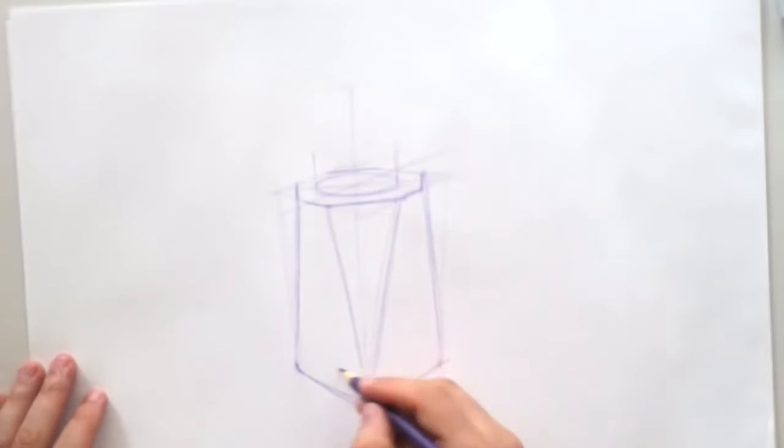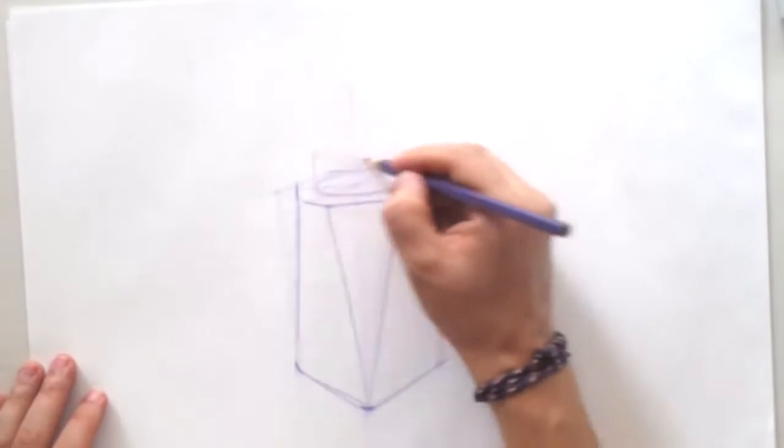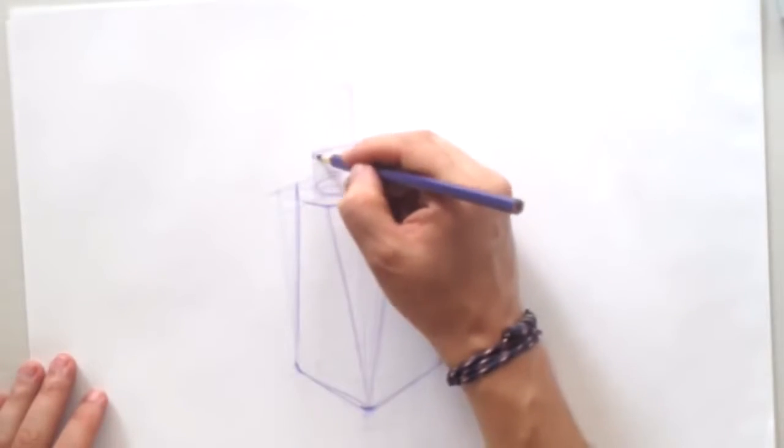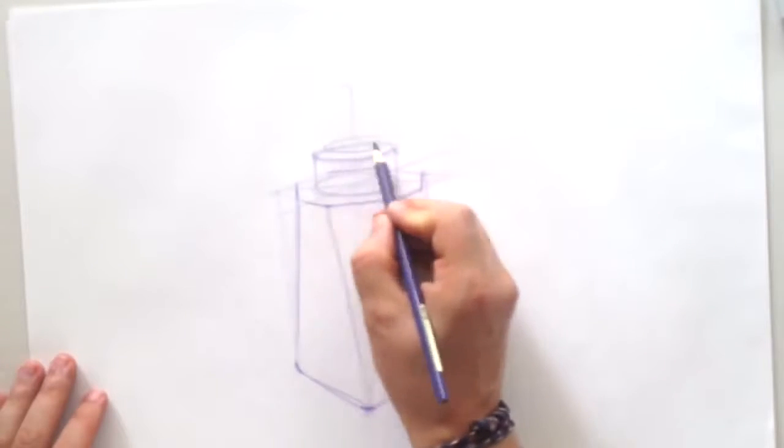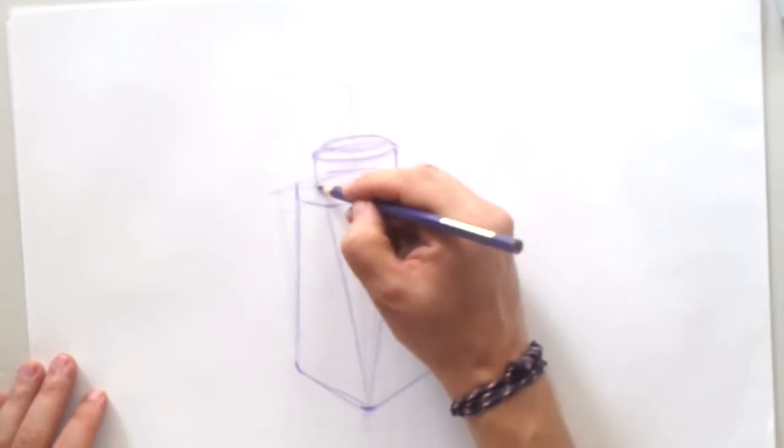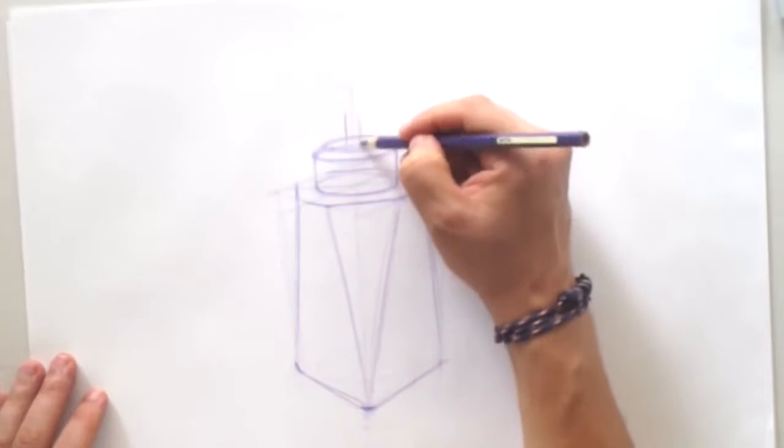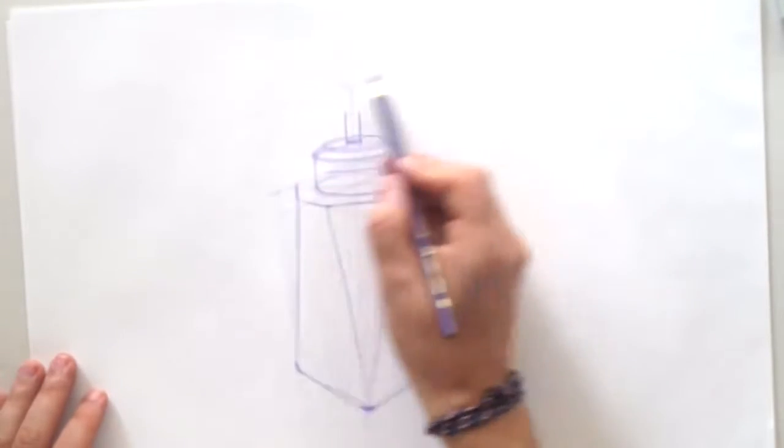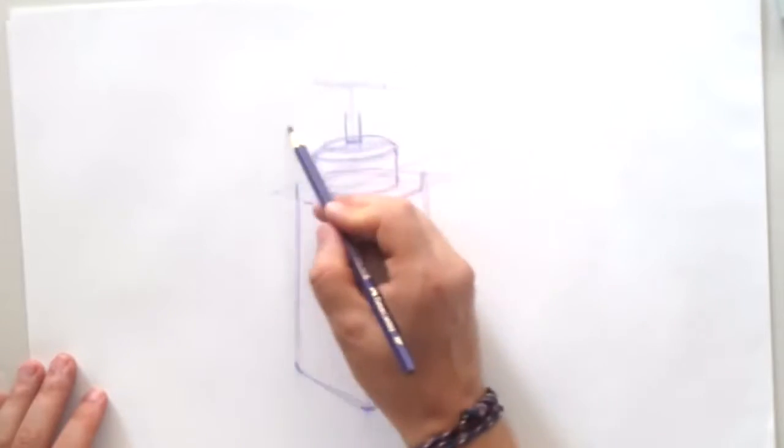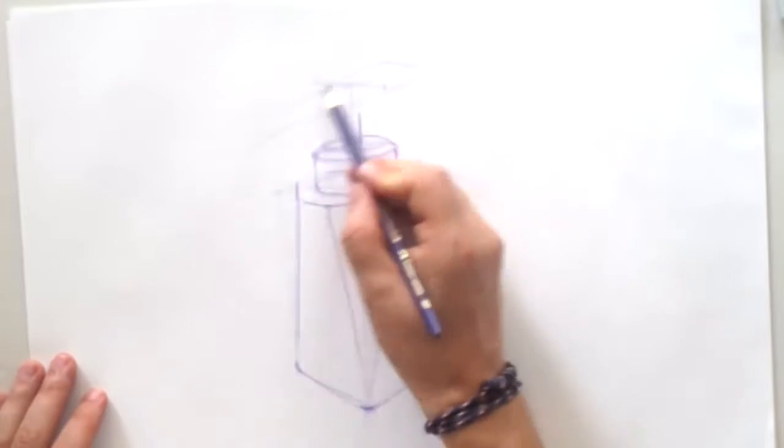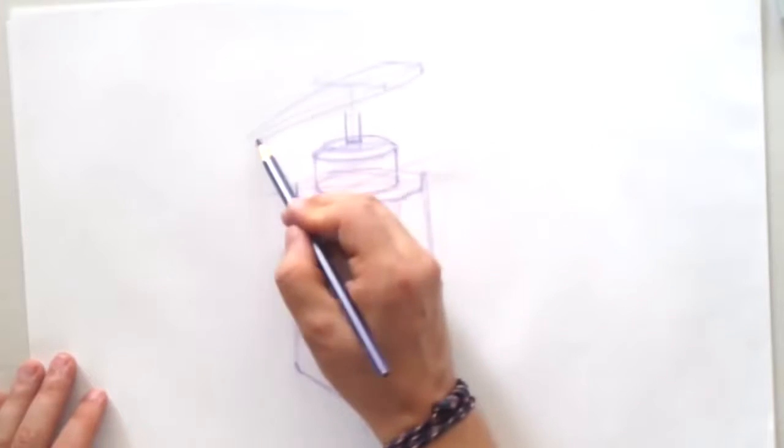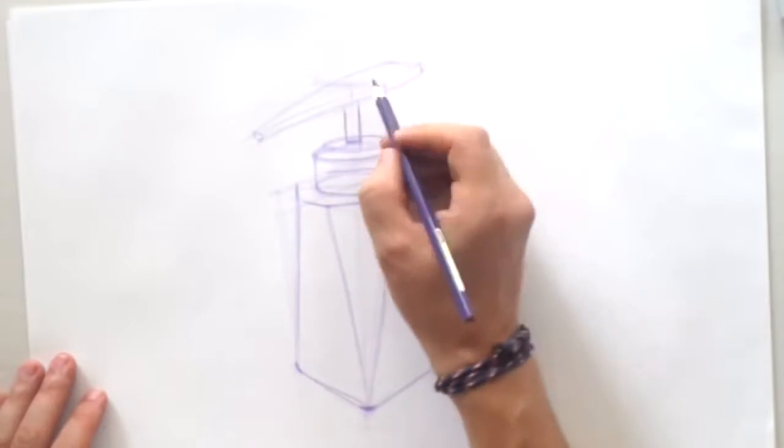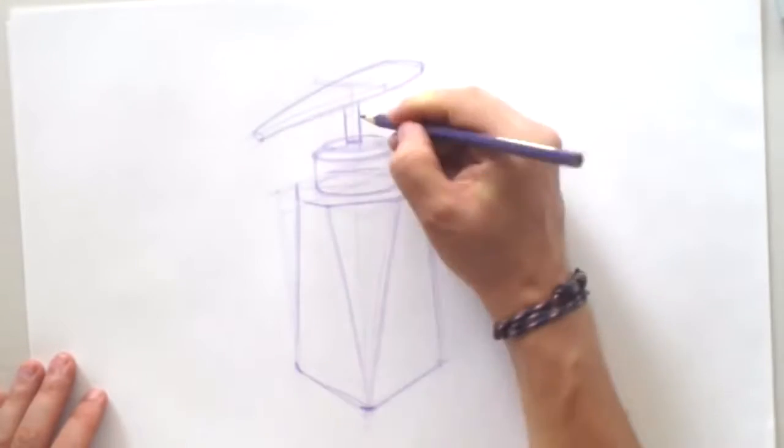So as you can see I'm using two points perspective to create the base. And I'm using ellipses to create this cylinder on top. And one more detail on top of that, actually, is that part that you press.